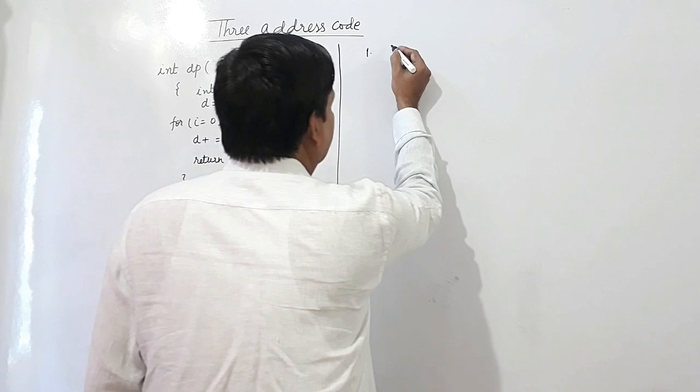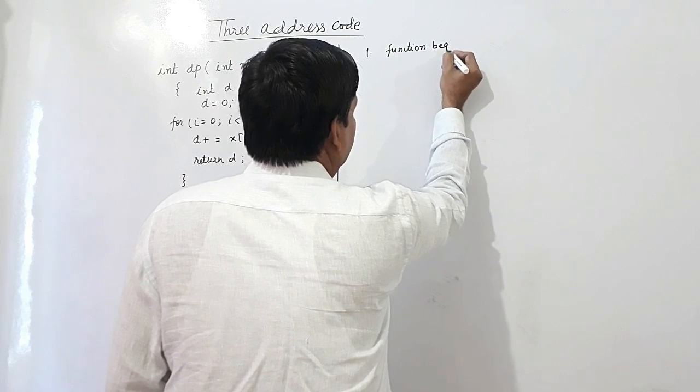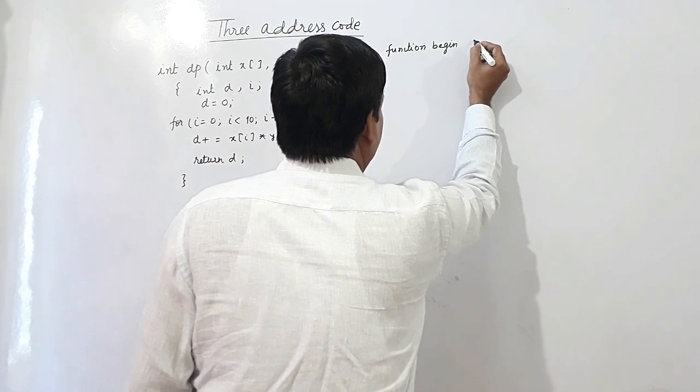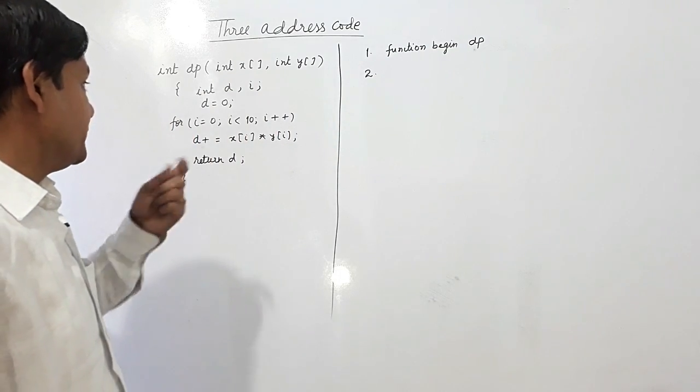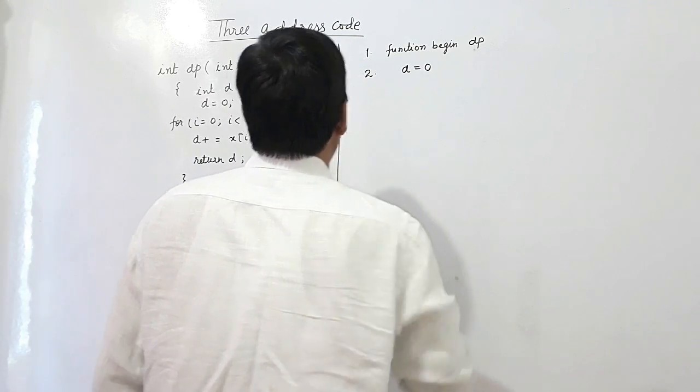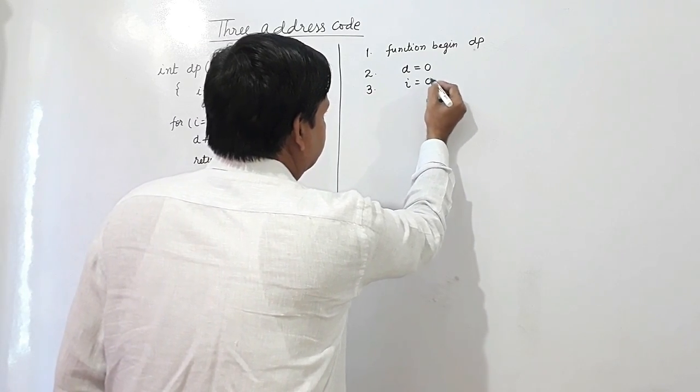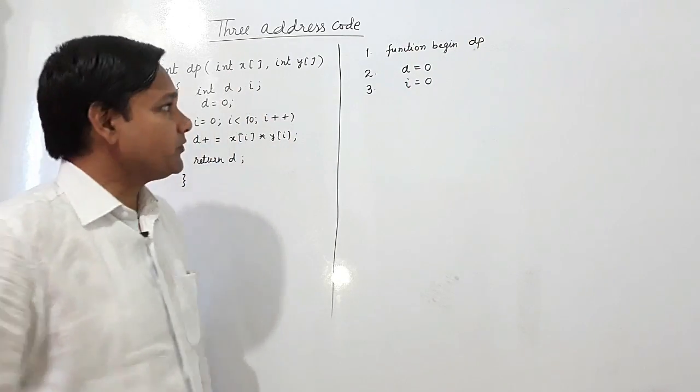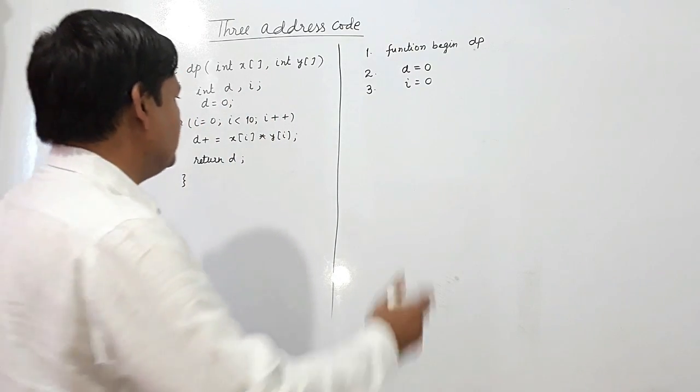What is the name? dp. So I am writing dp. I am beginning with function dp and value of d is assigned 0.